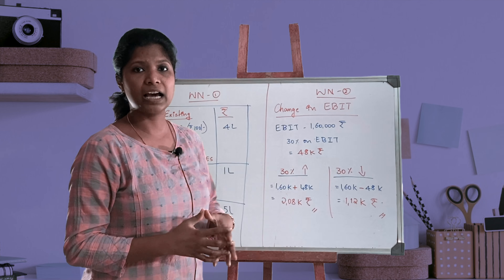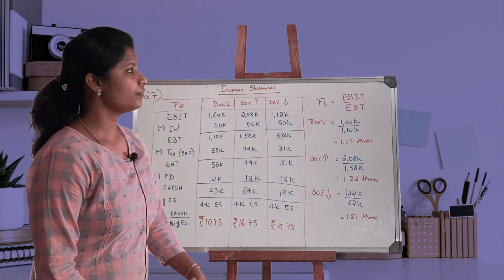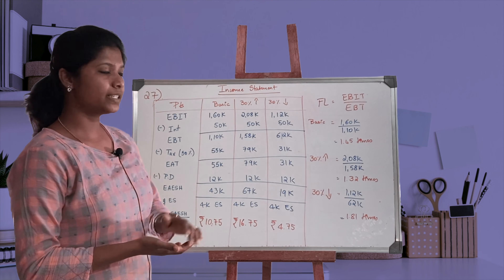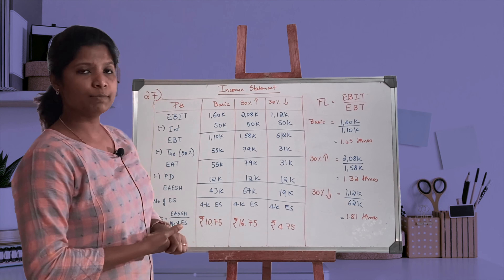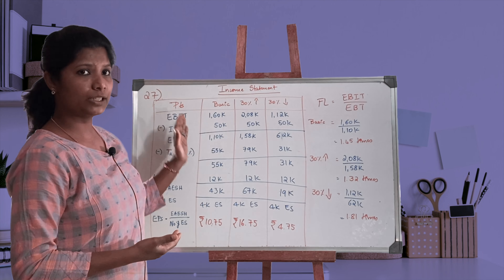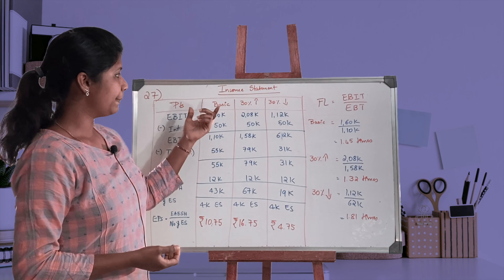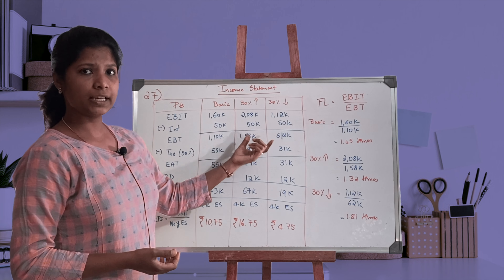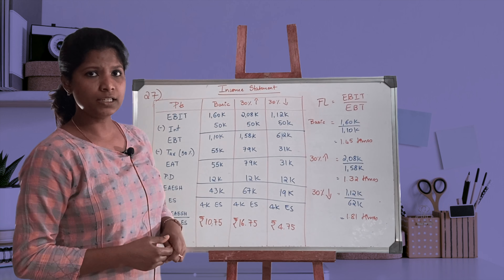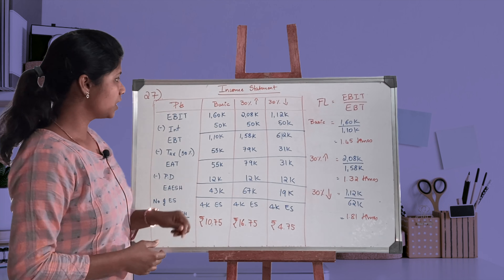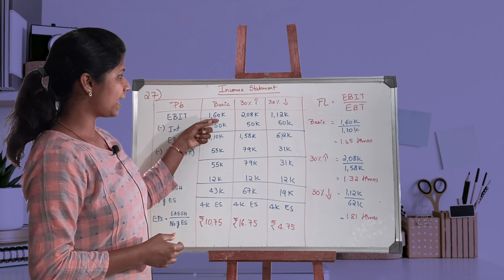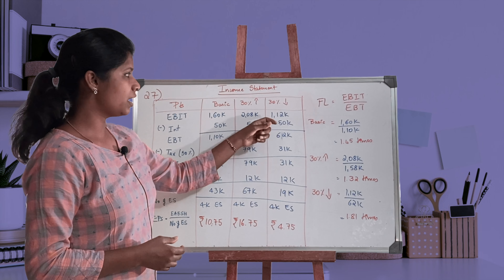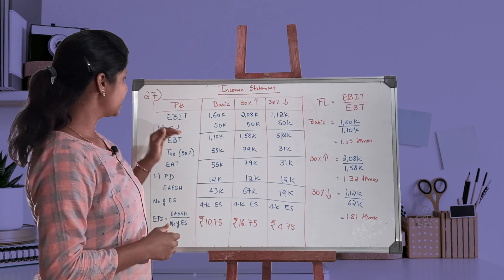We've completed our working notes, so let's begin the income statement with three columns: Particulars, basic EBIT of 1,60,000; 30% increase at 2,08,000; and 30% decrease at 1,12,000.